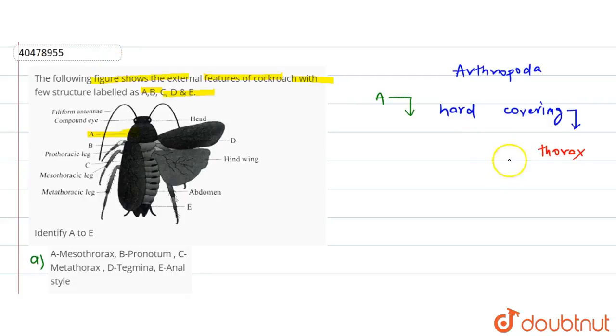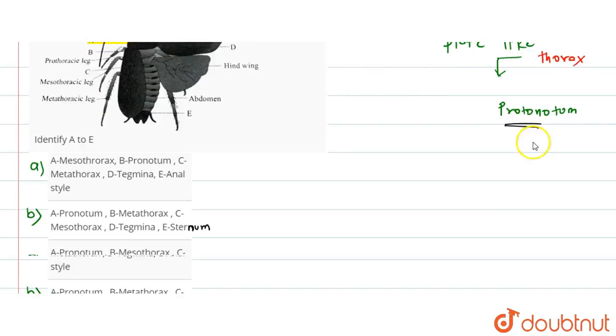This hard covering of thorax is plate-like, and we call it pronotum. So the first labeling is pronotum. Let's talk about the second labeling.